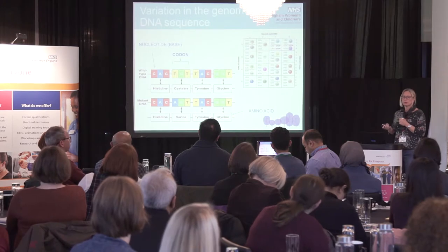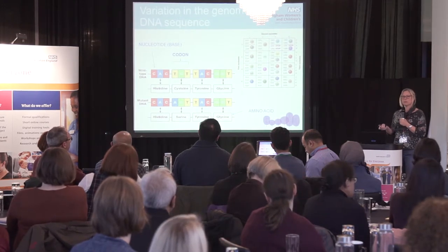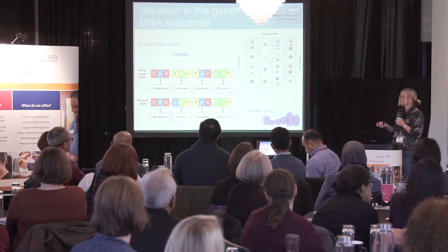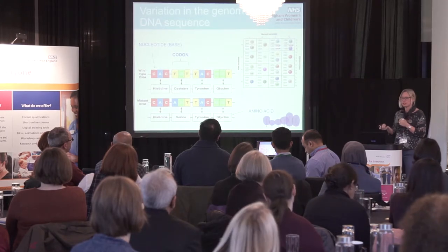The consequences of such a change are completely variable. Often these kinds of changes are tolerated by the cell with no consequence to the protein. Every single one of us contains thousands of these types of changes — this is what's responsible for the normal differences between us all. However, at the other end of the scale, the consequence could be completely devastating. Just this single type of change could stop the protein from folding or functioning properly and could cause a very serious genetic condition.